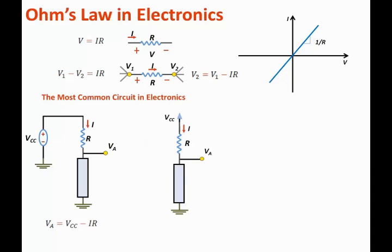Again the value of the current I is known and the current flows downward. Hence the voltage at VA is less than the top voltage which is VCC by the voltage drop across the resistor. Or we can state that VA is equal to VCC minus I times R.